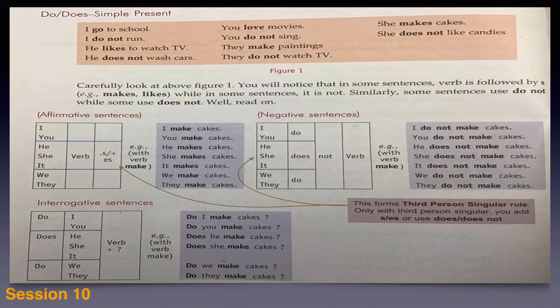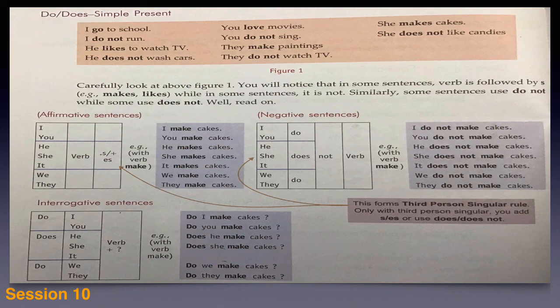The first one is: I go to school. Second: you love movies. She makes cakes. I do not run. You do not sing. She does not like candies. He likes to watch TV. They make paintings. They do not watch TV.